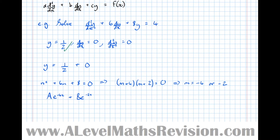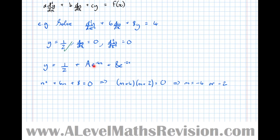So whilst ae^(−4x) plus be^(−2x) aren't a solution on their own, they can tag along for the ride because they contribute 0 to the solution. The y=1/2 piece gives us the 4. So y=1/2 is what we call the particular integral, and ae^(−4x) plus be^(−2x) complements the solution — so this is called the complementary function. We abbreviate the particular integral as PI and the complementary function as CF.